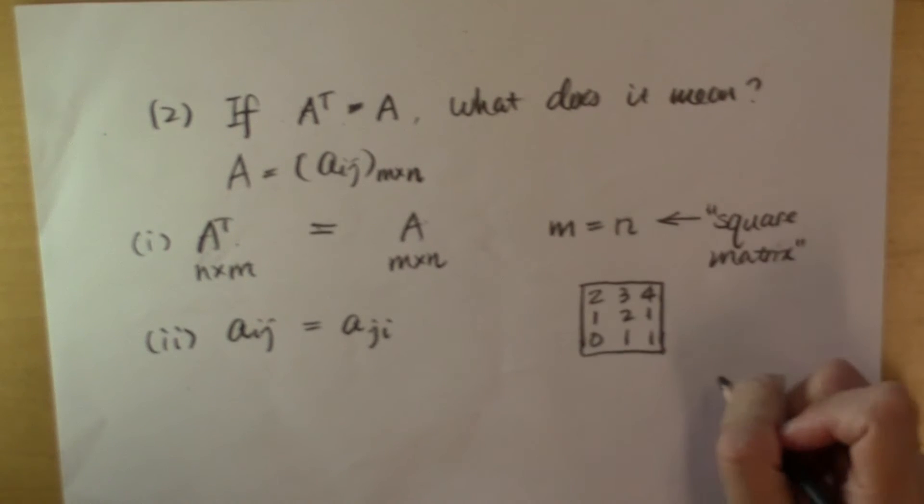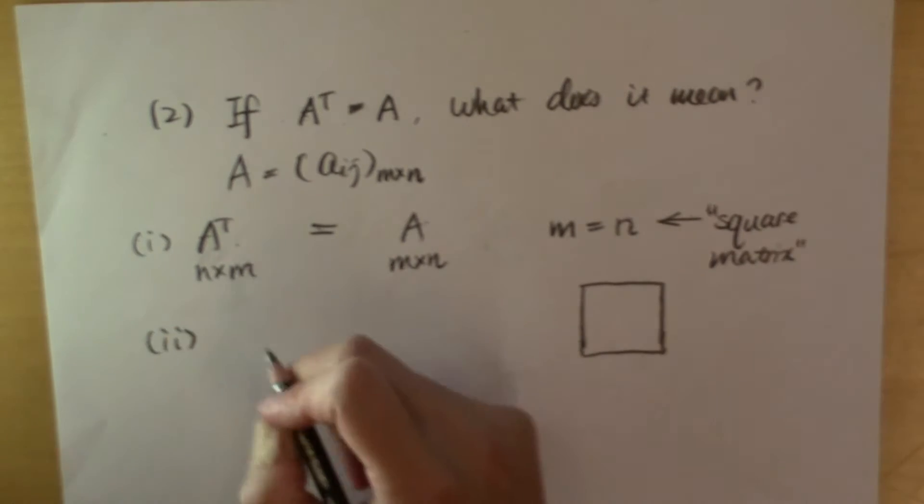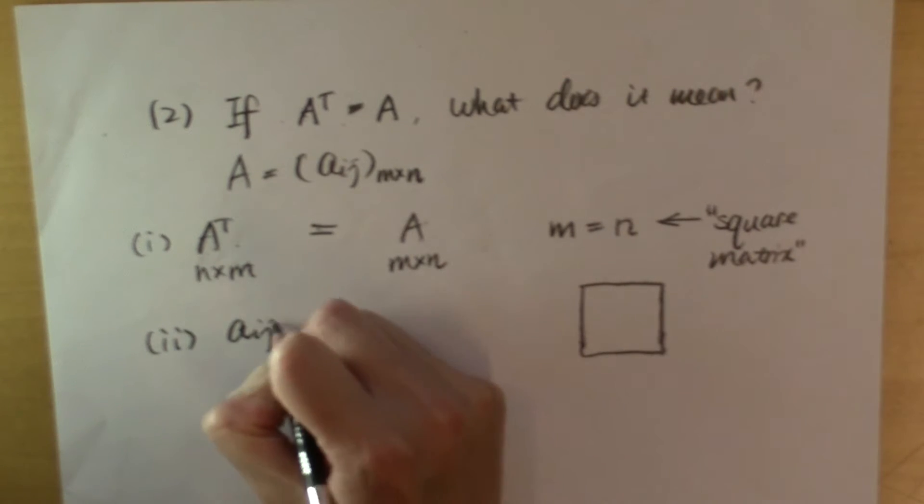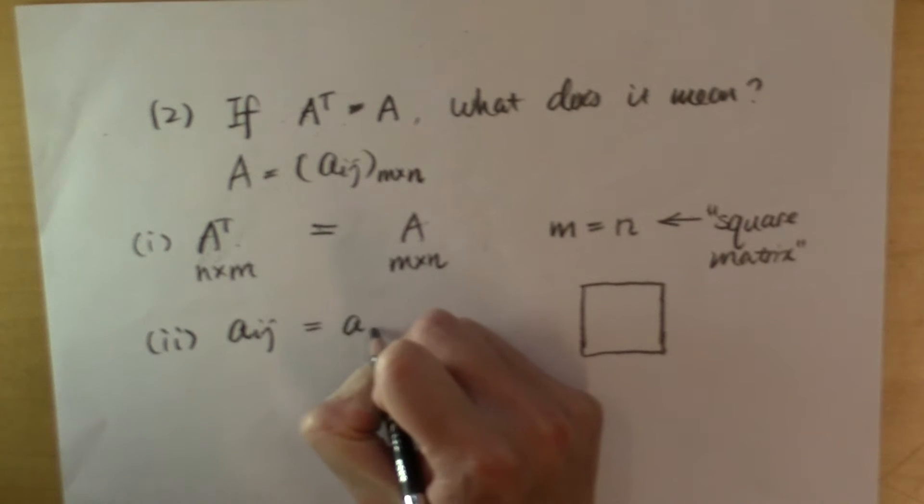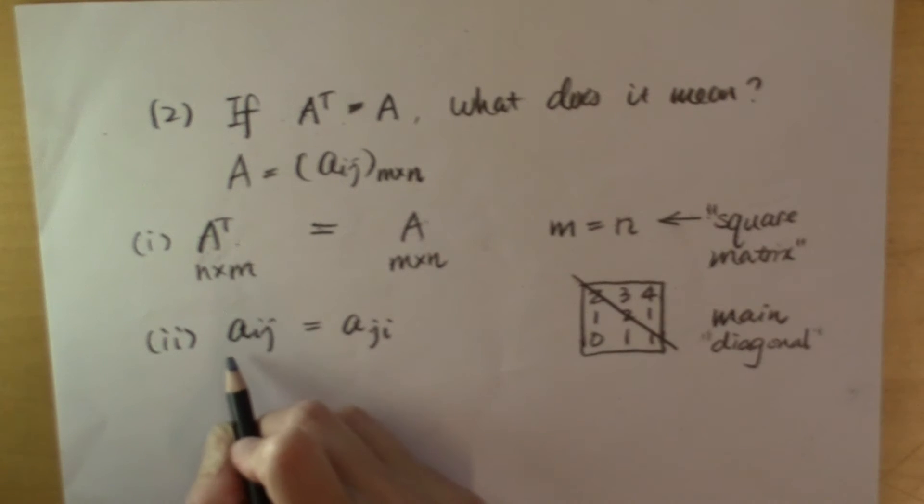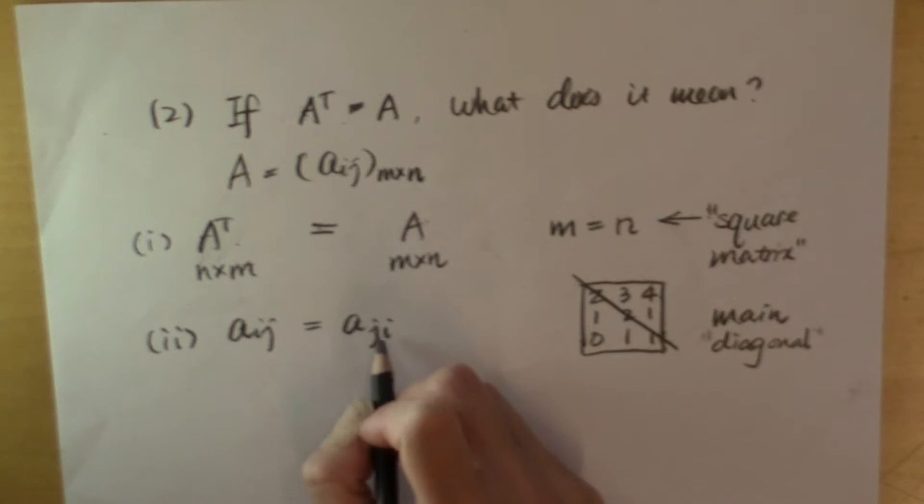For a square matrix, we call this line the main diagonal. Secondly, we know that A sub ij has to equal A sub ji. So this means the matrix has a symmetry. The entries in this matrix are symmetric with respect to this main diagonal.